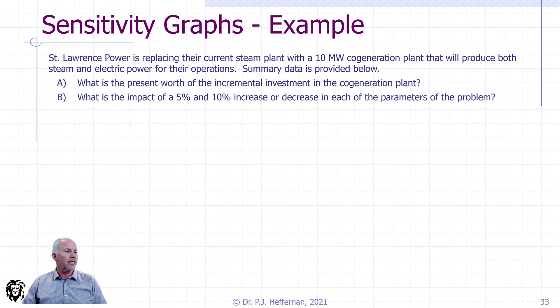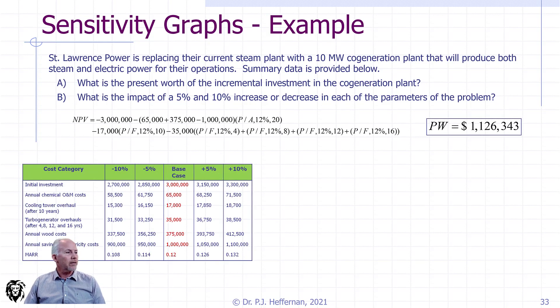We're not going to do the details of the cash flows, but we'll get the summary data. The question then is, what is the present worth of the incremental investment in the co-gen plant, and what impact of 5% and 10% increases or decreases to each of the parameters that we've considered in our estimate to the problem? Here is the net present value calculated out. I'm not going to go into it. It's currently on the base case, has a present worth of a little over a million dollars.